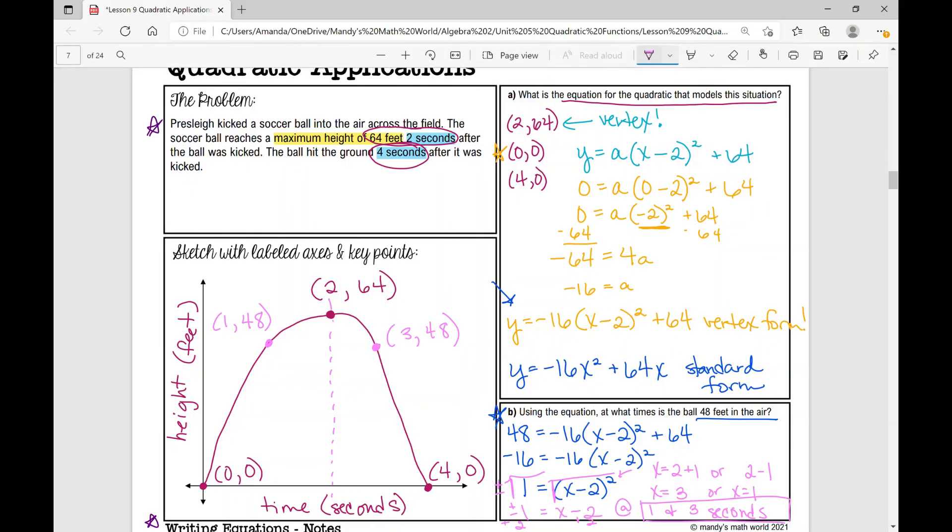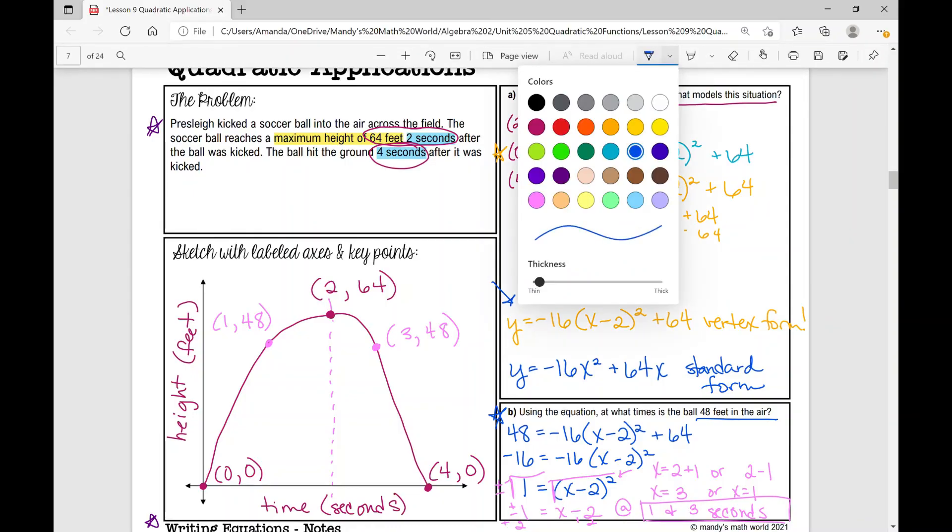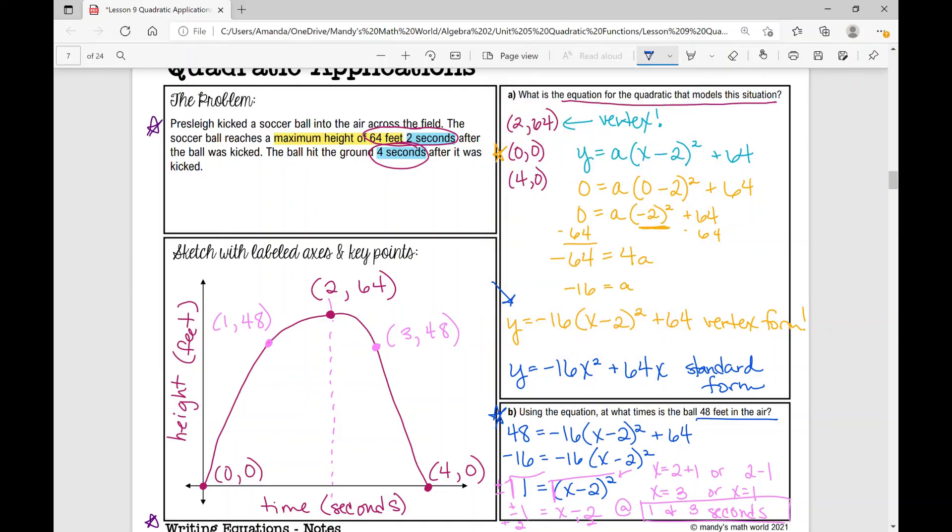So let's talk about properties of quadratics. That axis of symmetry, it's like a mirror image, what's on the left and what's on the right. So if my vertex, if the time is two, then one second to the right, or one second higher, is going to be the same height as one second to the left, or one second before. So 1,48, that would make sense. 1,48, 2,64 highest point, and then 3,48.